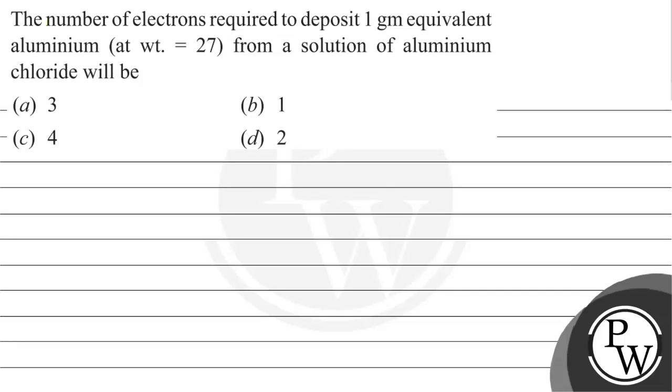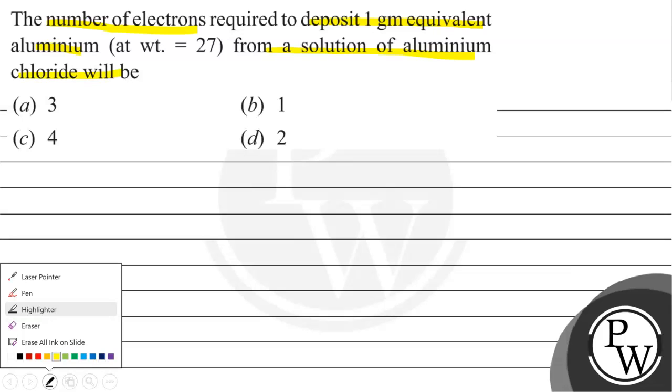Hello, let's read this question. The question says: the number of electrons required to deposit one gram equivalent of aluminum from a solution of aluminum chloride will be. There are four options available. Before starting the question, let us see what is the key concept.